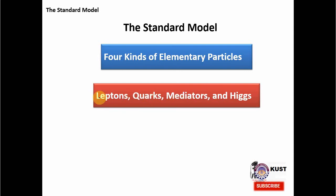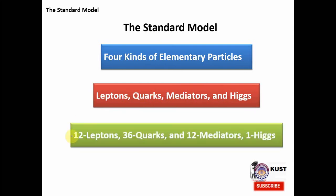In number, leptons are 12. That is electron, electron neutrino, muon, muon neutrino, tau and tau neutrino — these are six leptons. But then we have their six antiparticles, so in total we have 12 leptons in the Standard Model of particle physics.